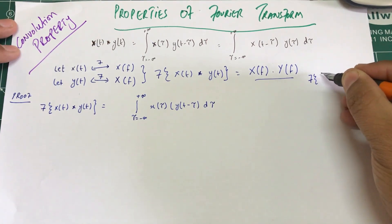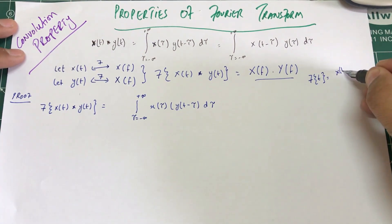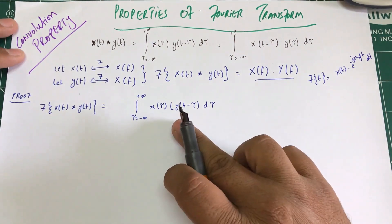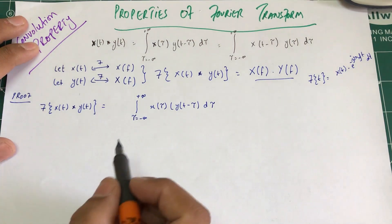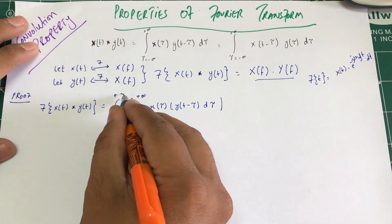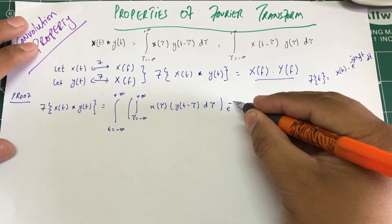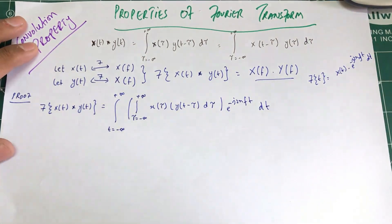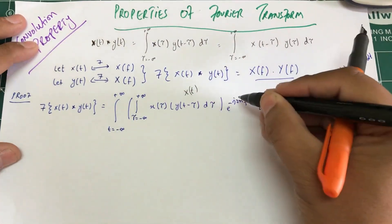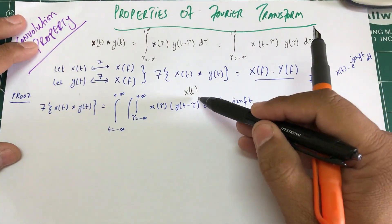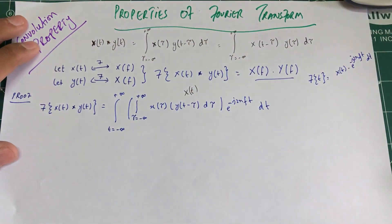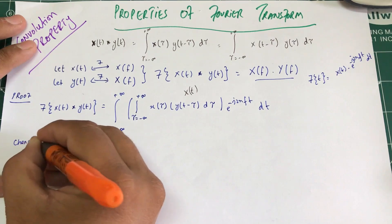The definition of the Fourier transform is the function multiplied by e to the negative j 2π f t, dt. So x(t) here is that function — the convolution expression — and I'm going to multiply this whole thing by the exponential, integrating t from negative infinity to positive infinity times e to the negative j 2π f t, dt. This inside is x(t), which is x(t) convolved with y(t).